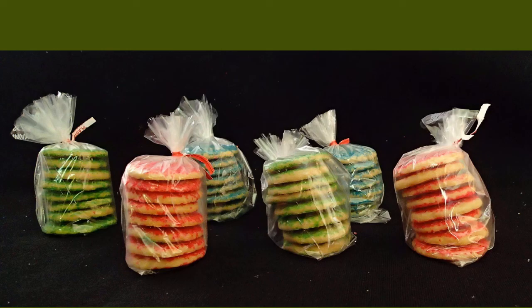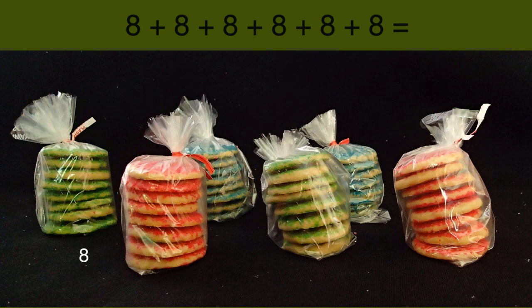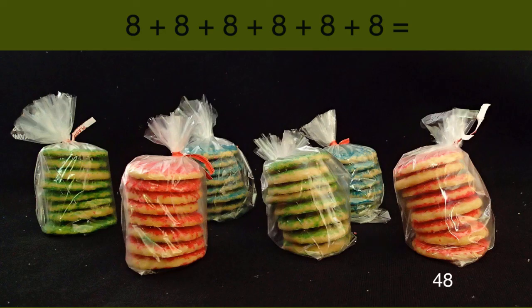I know that there are 8 cookies in each bag, so I simply could add 8 six times. That's 8 plus 8 is 16, plus 8 more is 24, plus 8 more is 32, plus 8 more is 40, plus 8 more is 48. So 6 groups of 8 is 48. I have 48 cookies.